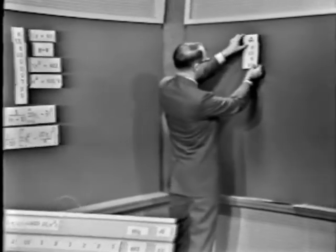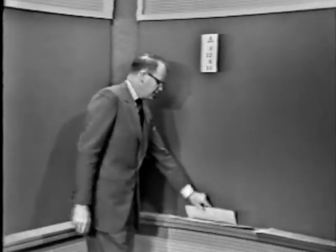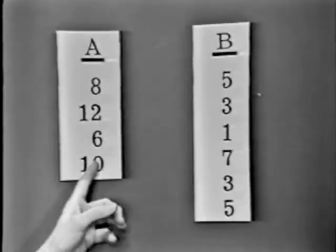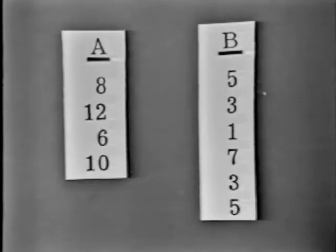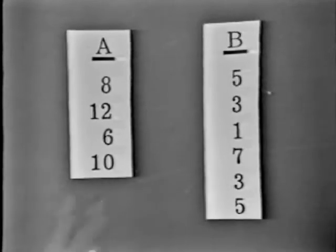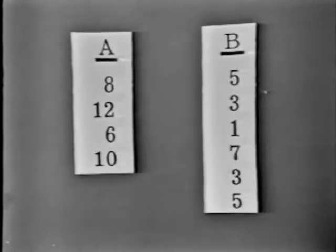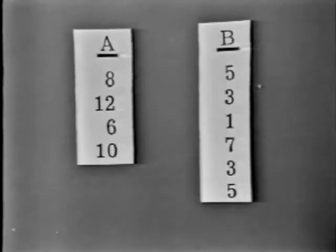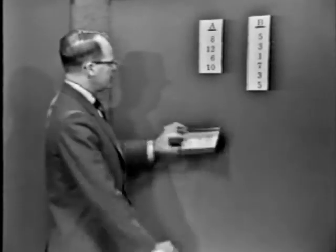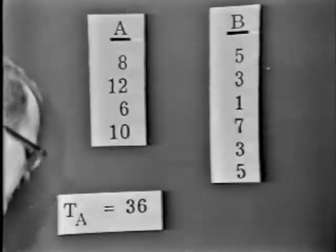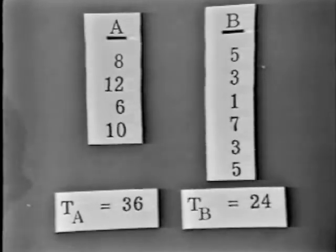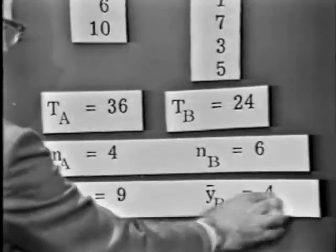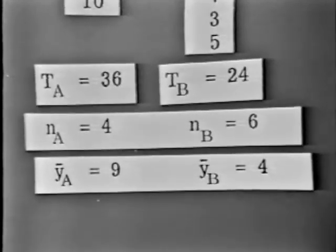Here are the A data. These might be six observations taken on electrical motors, or four observations. These four observations could be taken on motors of type A, and these six observations on motors of type B, or these four observations on chemical process A, and these six observations on chemical process B. I've taken advantage of this additional information to separate our ten observations into two groups. Let's get the estimate of the mean of process A and the mean of process B. The average Y bar A is nine, and the average Y bar B is four.